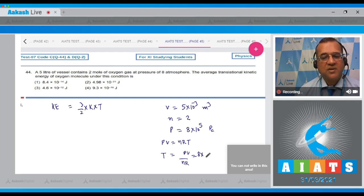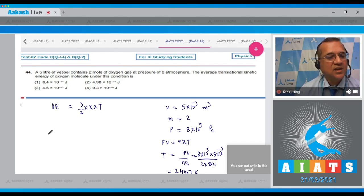The pressure is 8×10⁵, the volume is 5×10⁻³, n is 2, and R is 8.31. When you solve this, temperature comes to be 240.7.